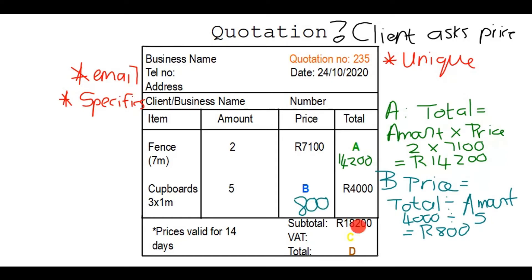Now we get to the subtotal, which is eighteen thousand two hundred. This gives you another way you could have calculated A — if fourteen thousand two hundred plus four thousand gives eighteen thousand two hundred, that confirms the subtotal.